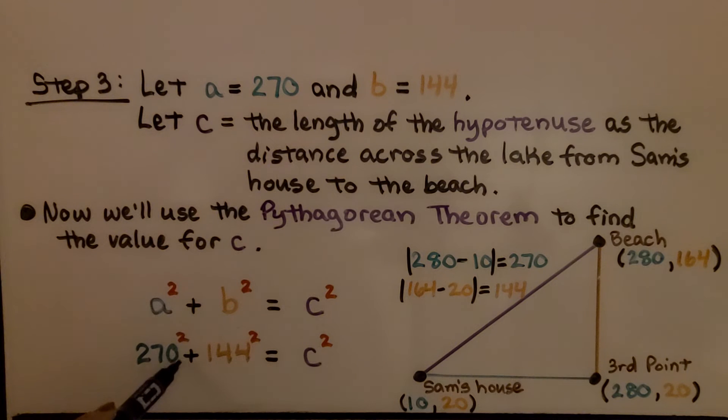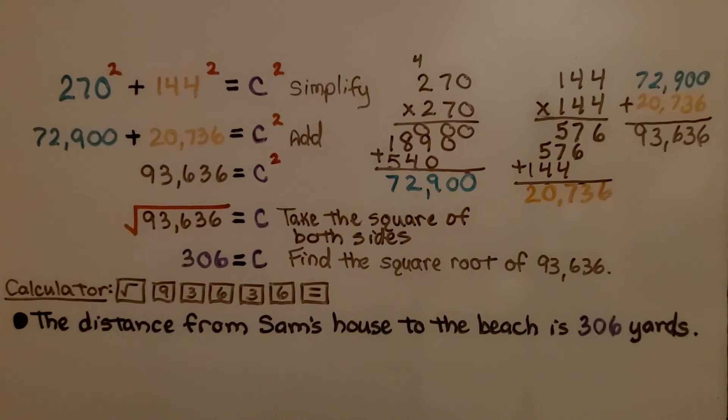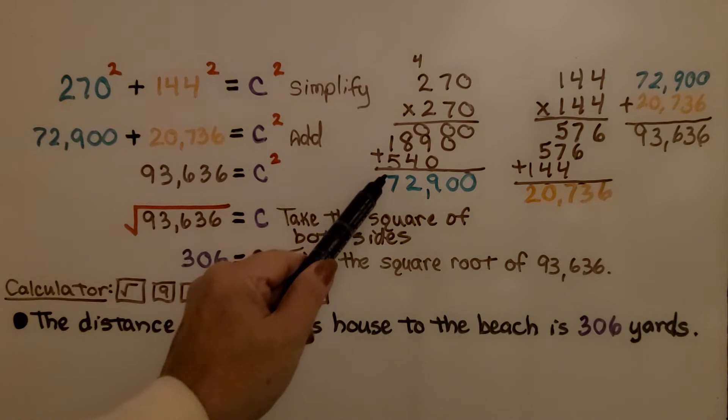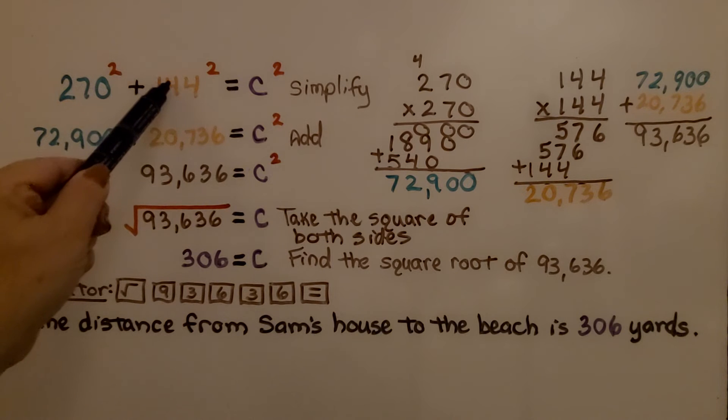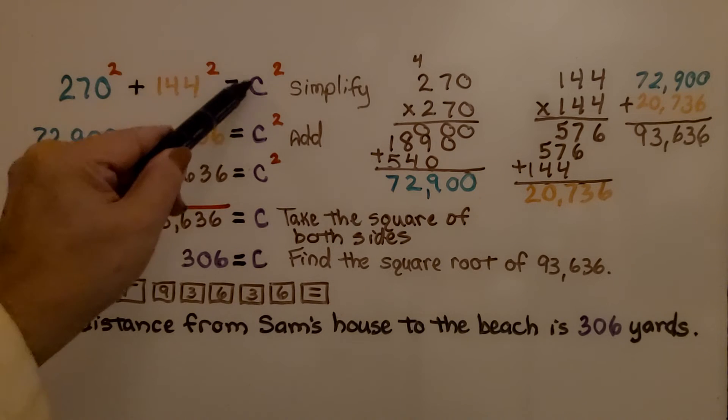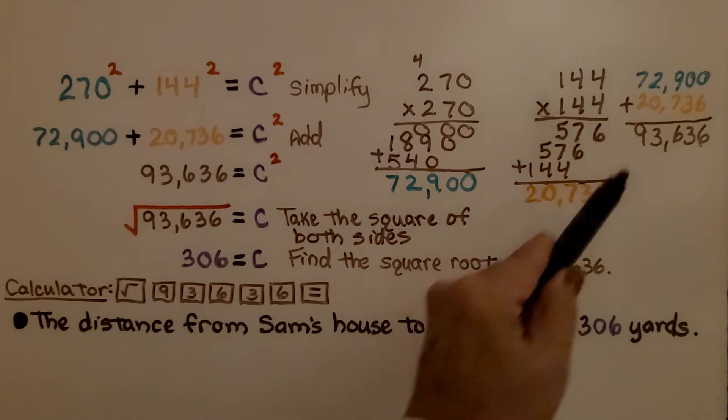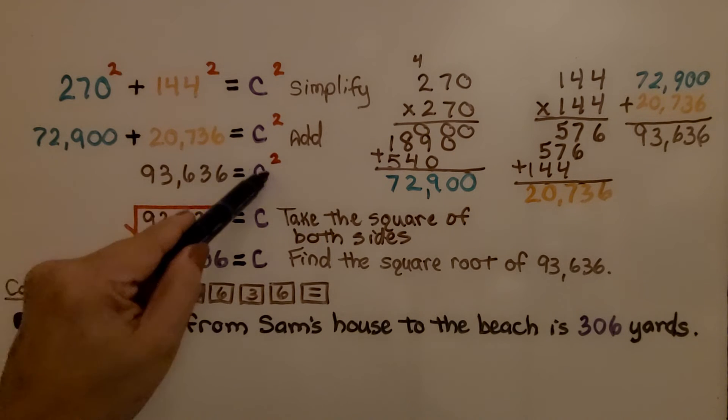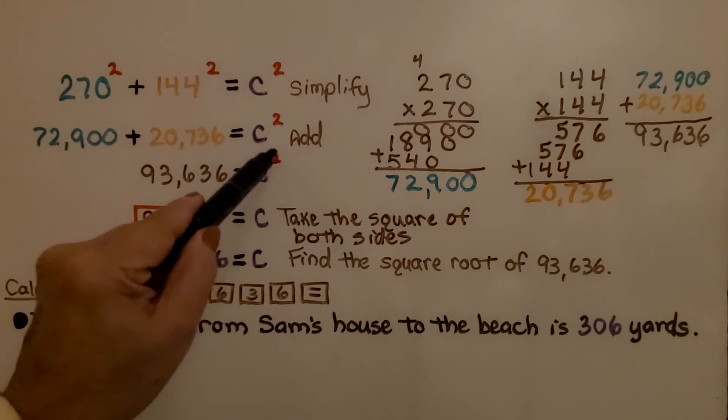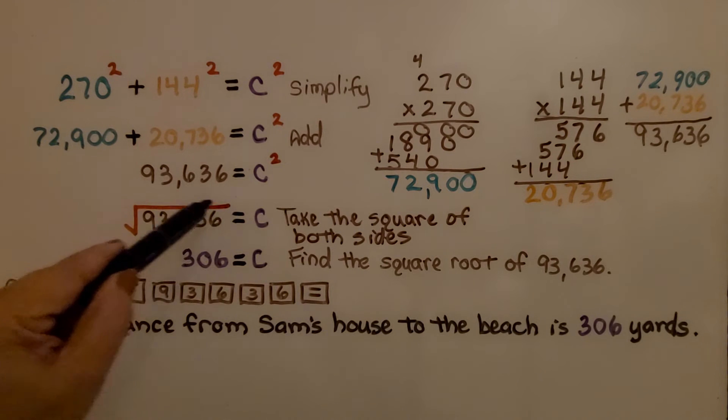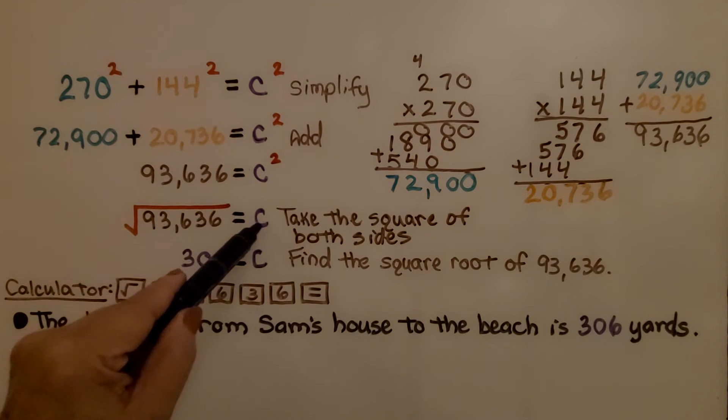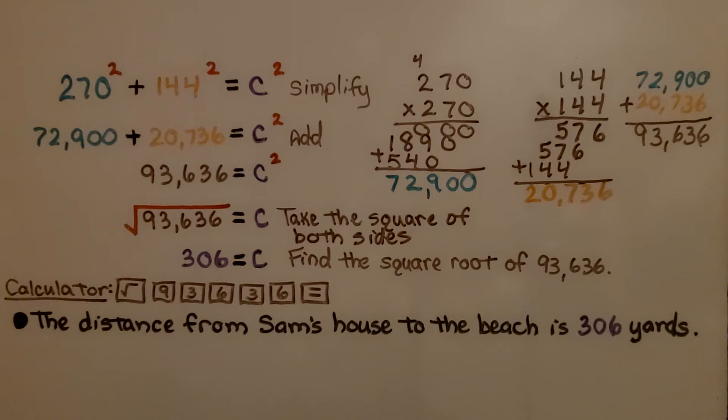For A, we've got 270 squared plus B, 144 squared is going to equal C squared. Now we simplify. 270 times 270 is 72,900. 144 times 144 is 20,736. They're equal to C squared. We add these together and we get 93,636 is equal to C squared. We take the square root of both sides by removing the exponent and putting a radical sign around the 93,636. And it's set to equal C now because we've removed that exponent. We find the square root of 93,636. On a calculator, we hit the square root symbol 9-3-6-3-6 and equal. The distance from Sam's house to the beach is 306 yards.